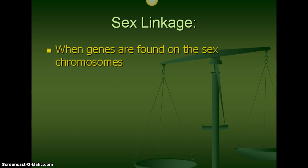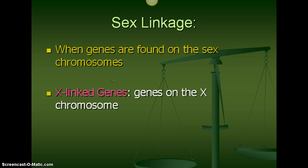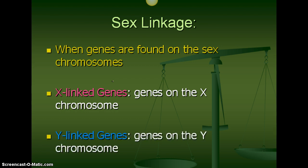There are some times that chromosomes or traits link together. Sex linkage is when genes are found on the sex chromosomes. X-linked genes are genes that are on the X chromosome, and Y-linked genes are genes that are on the Y chromosome. Most of the genes that are sex linked are on the X chromosome. The Y-linked genes are pretty much just genes that produce or code for the male reproductive organs. There are a few traits on the Y chromosome, but not a whole lot.